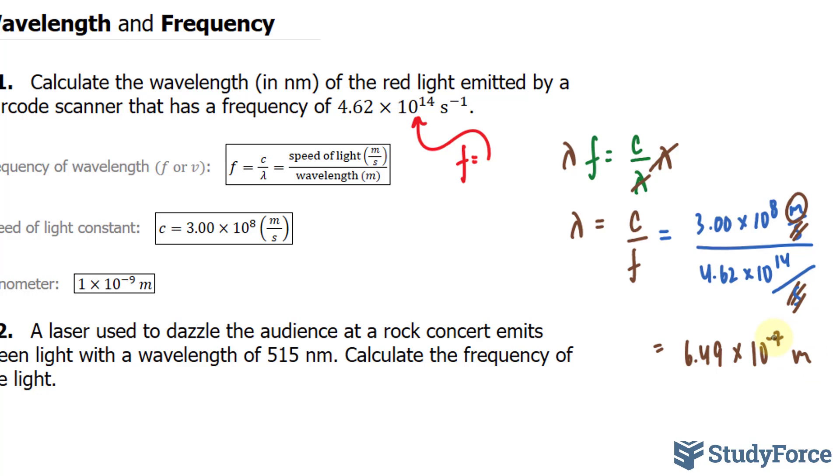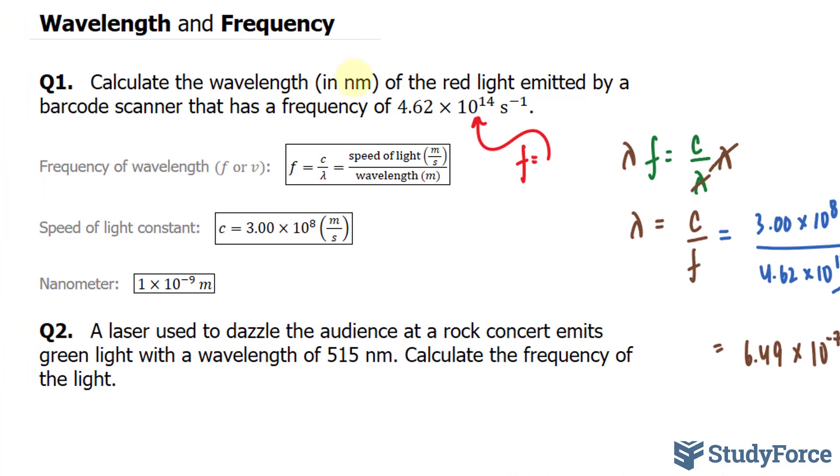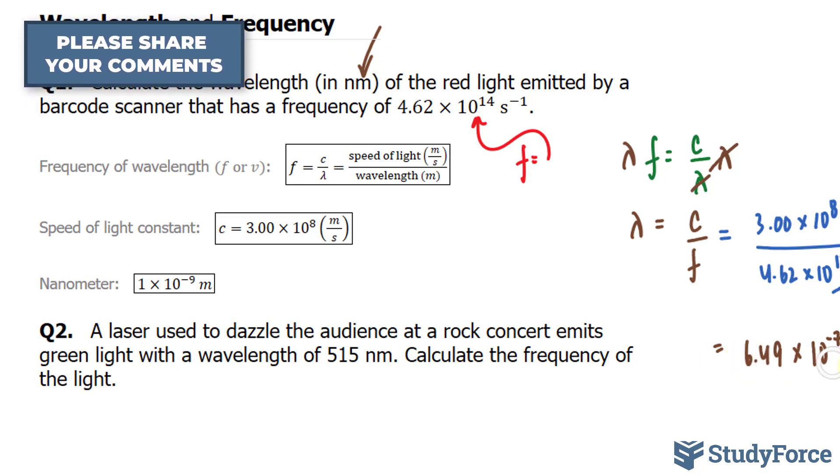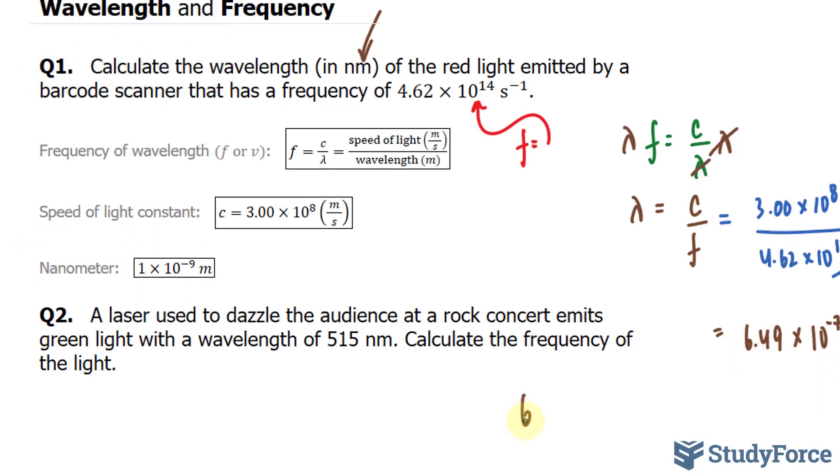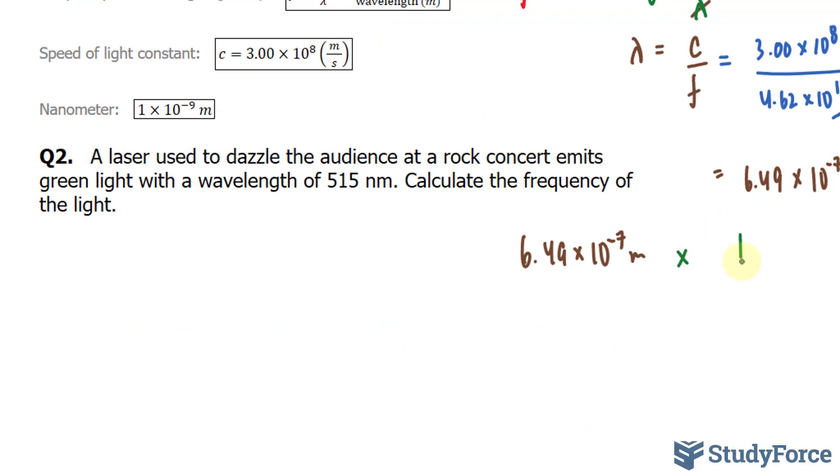Remember, the question wants it in nanometers, and that's written right here. So what I'll do is convert this into nanometers using this conversion ratio. So 6.49 times 10 to the power of negative 7 meters times 1 nanometer is equal to 10 to the power of negative 9 meters. This will cancel out with this, leaving us only with nanometers.